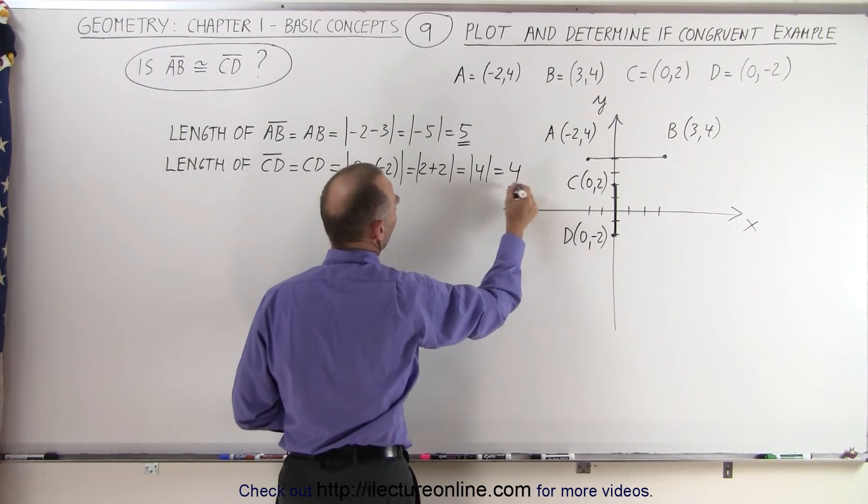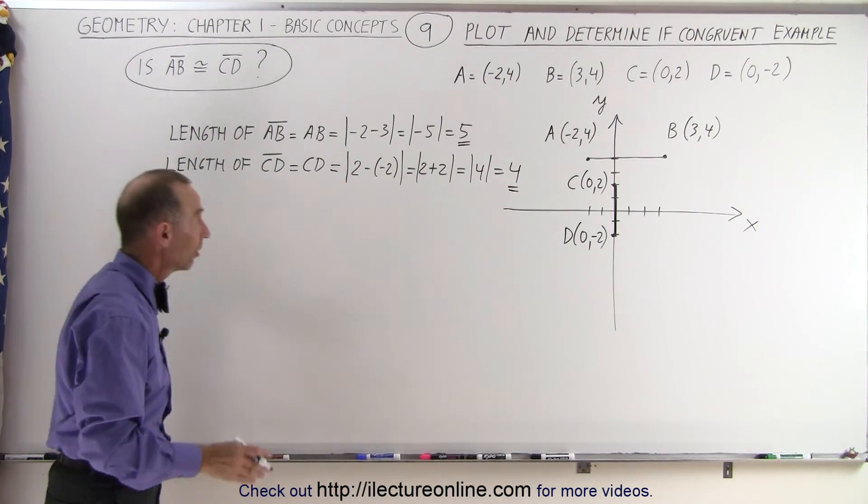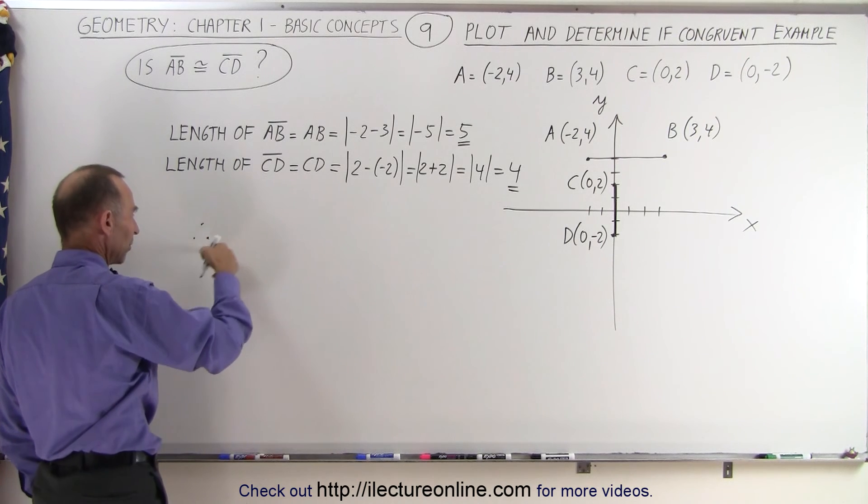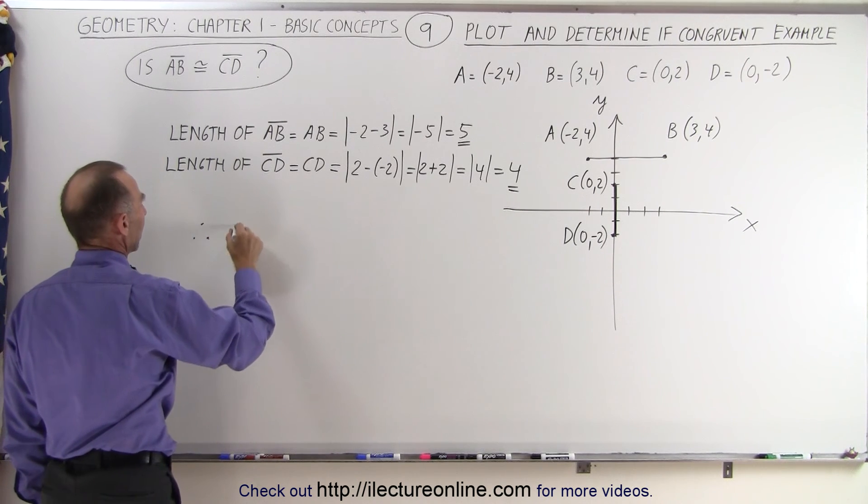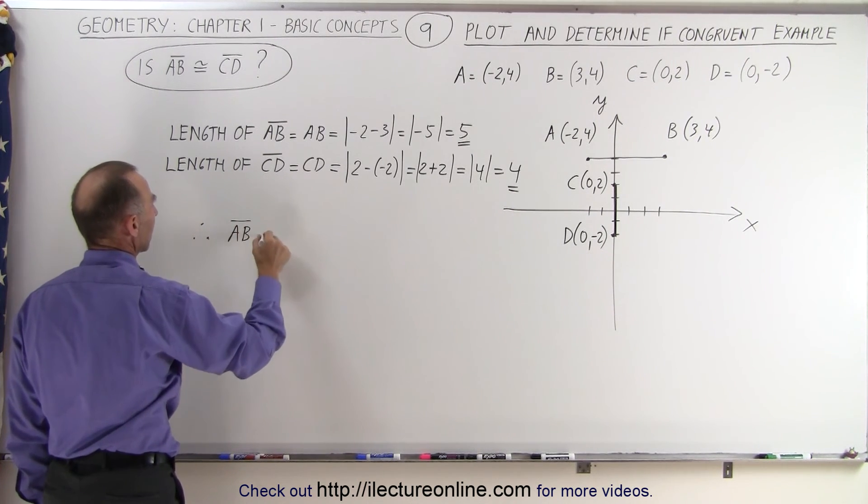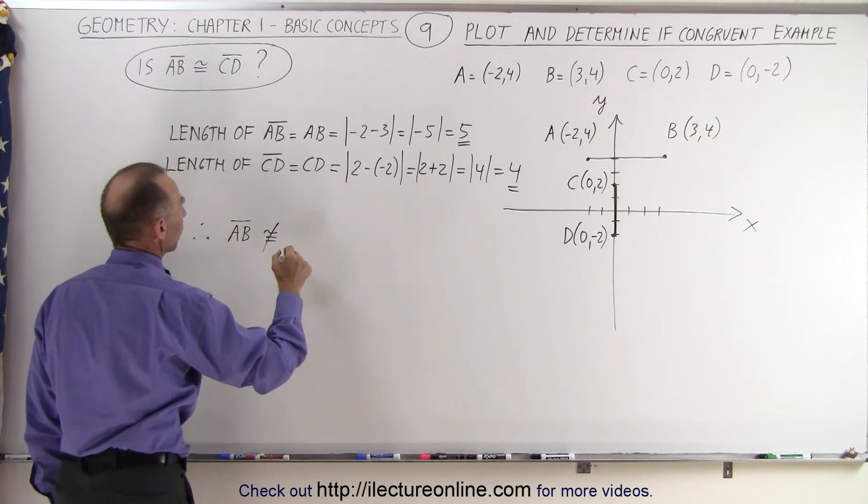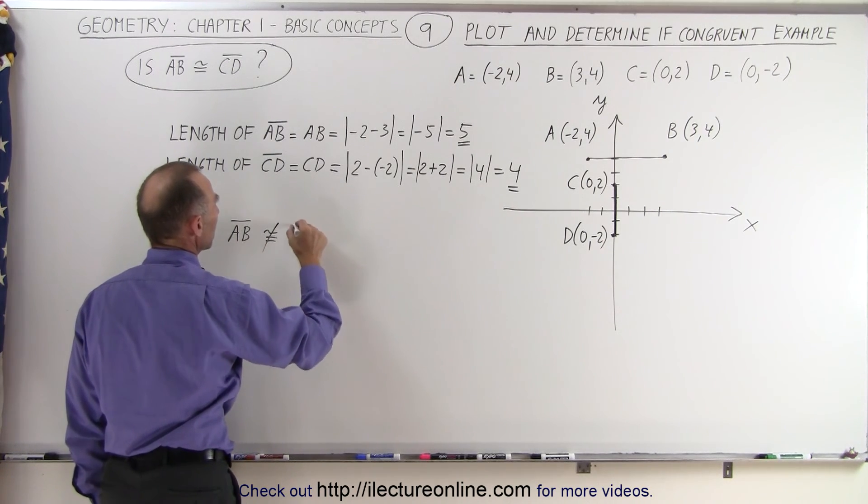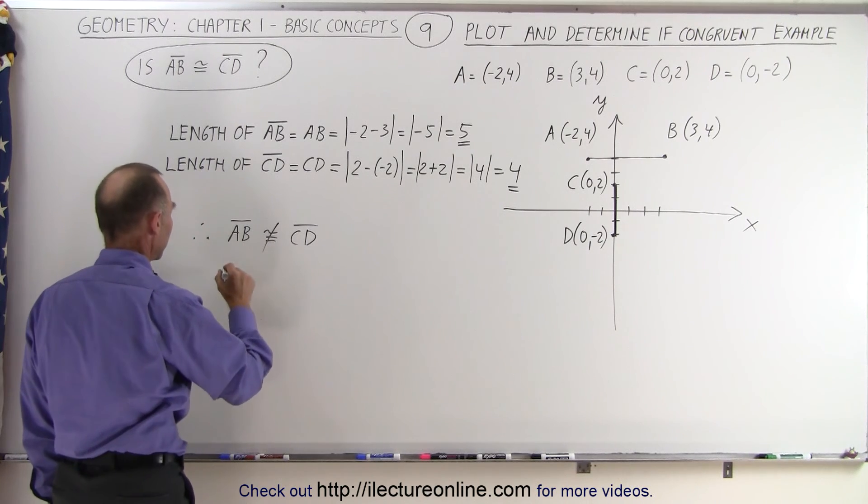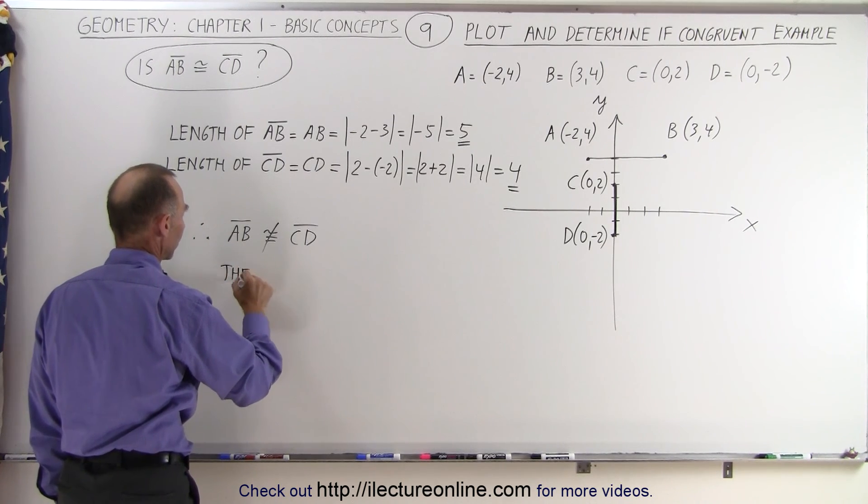Now notice, they do not appear to have the same length, so we can conclude, therefore—remember that symbol means therefore—AB is not congruent to CD. So just put a line through it, or simply say they are not congruent.